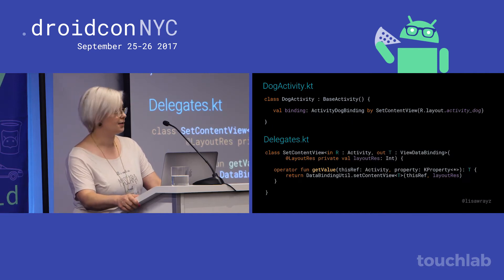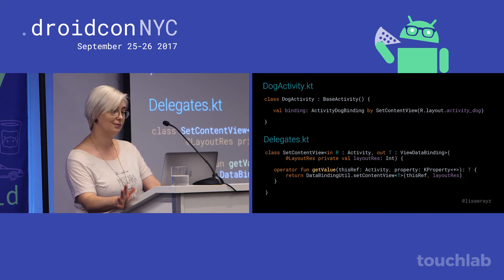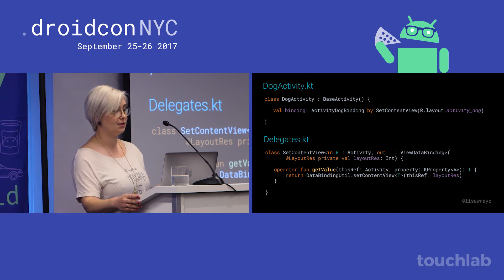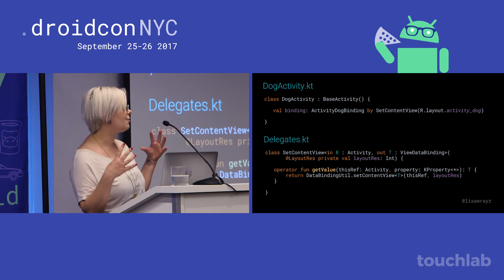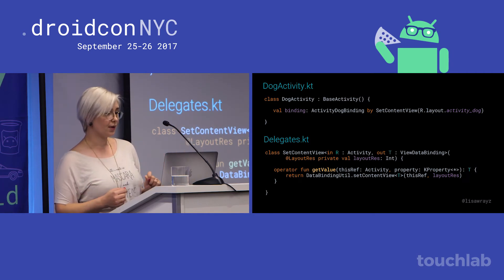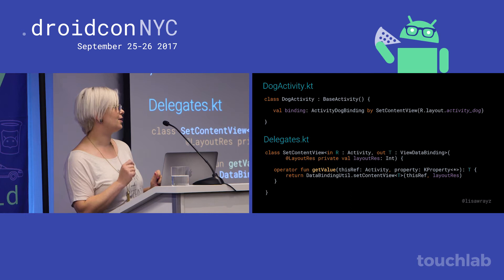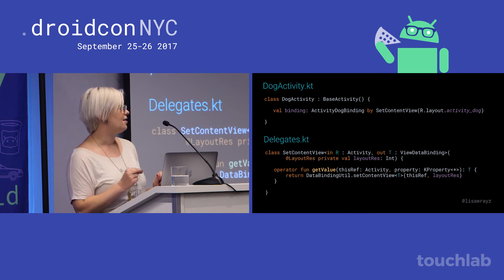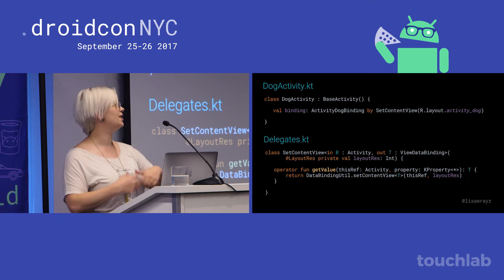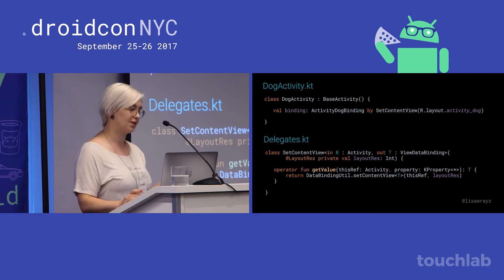Here's a first pass at the delegate. If you haven't made a delegate before, it's just a class — there's actually no specific interface you have to implement. It just needs a getValue method. In this case we have a reference to the enclosing class instance of the property, which is going to be an activity. However, the problem is this is going to be evaluated every time we access the property, and we're going to keep binding it over and over, which isn't good — which is why we were using lazy.